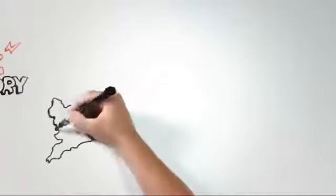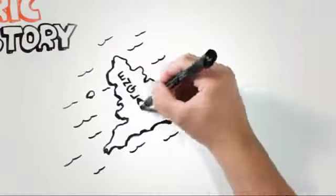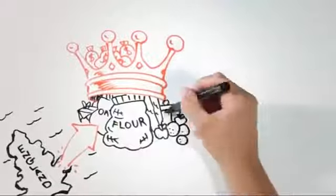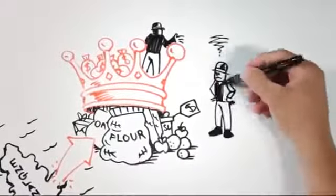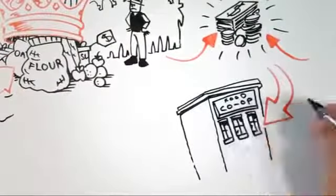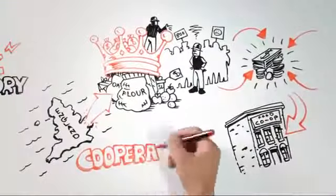Our story starts back in 1844 in not-so-merry England where a group of weavers fed up with the high price of company store groceries pooled their money to buy their own food, creating a new form of business: the cooperative.